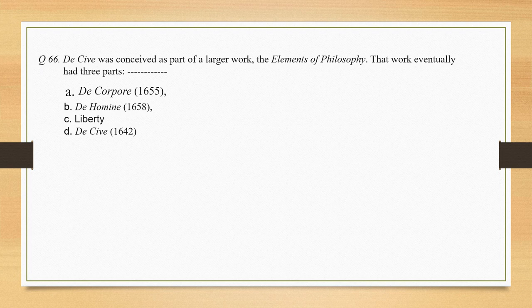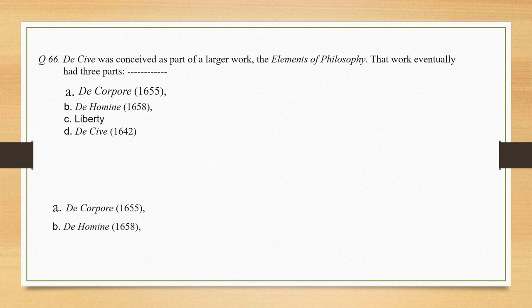De Cive was conceived as part of a larger work, the Elements of Philosophy. That work eventually has three parts: De Corpore, De Homine, and De Cive. The correct sequence is A, B, D.